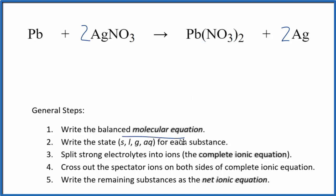Next we need to write the state for each substance. Lead, that's a metal, so that's solid. Nitrates, if you know your solubility rules, are very soluble (aq), dissolve and dissociate into their ions. Another nitrate here, lead nitrate, that's going to be aqueous as well. Silver, that's a metal, solid. Those are the states.